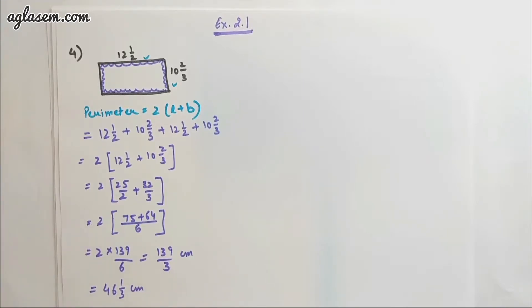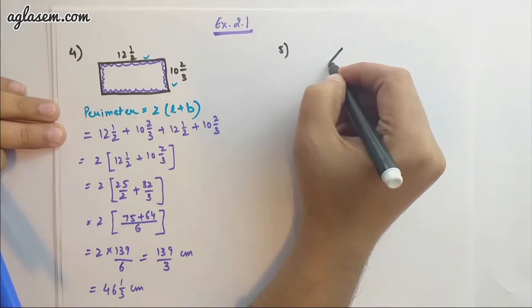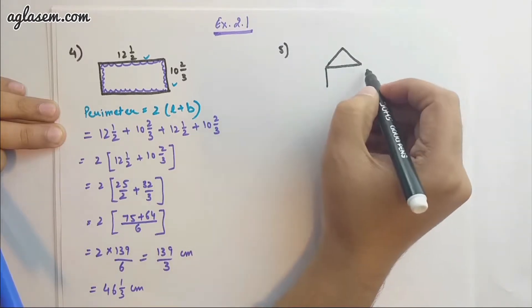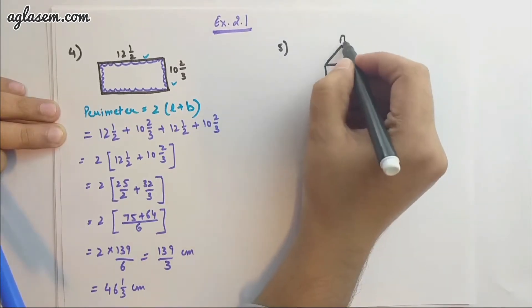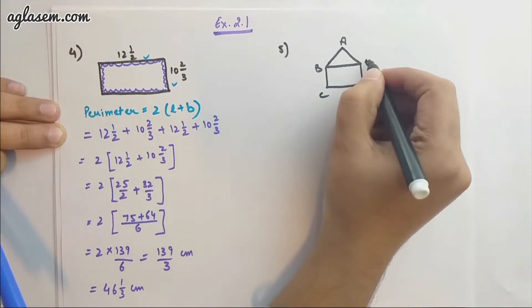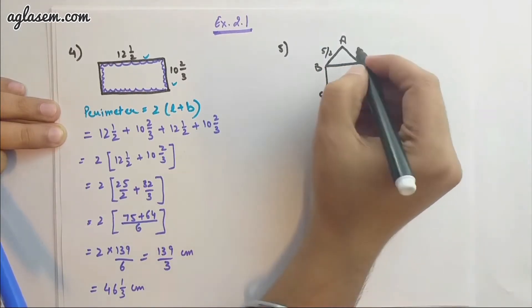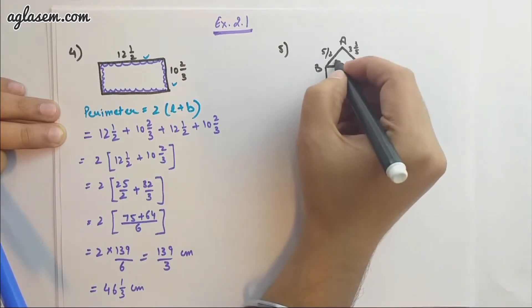Coming on to question number 5. We need to find the perimeter of a given figure, and the figure consists of a triangle and a rectangle. Let's mention the sides: this is A, this is B, this is C, this is D, and this is E. This is given as 5/2, this is 3 3/5, this is 2 3/4, and 7/6.